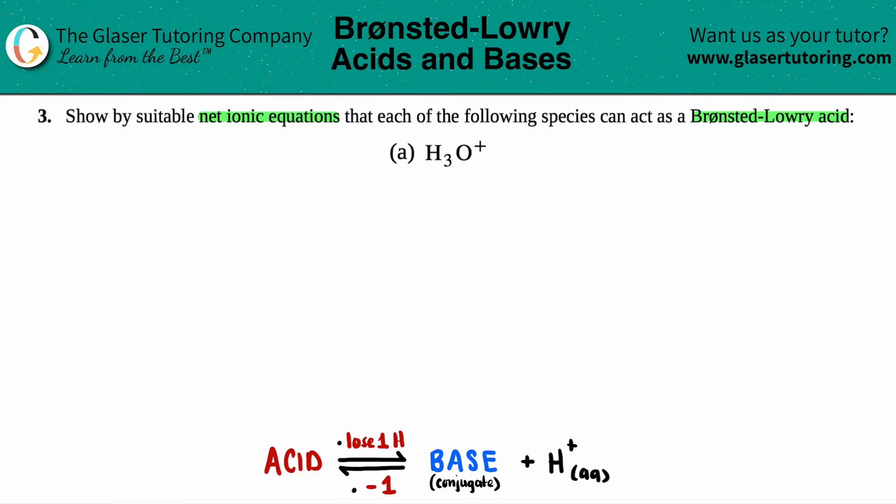So I wrote down a little quick trick here for you guys because what's going to happen is the acid, in this case H3O plus, once you turn it into something, that something is called the conjugate base. So it can't be two acids on both sides. H3O plus is going to act as an acid, and then once you manipulate it, it will turn into a conjugate base. So let's just write it out.